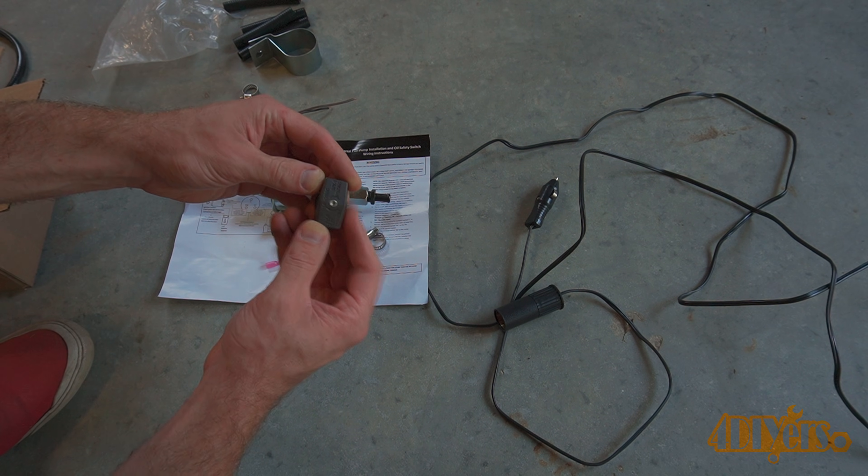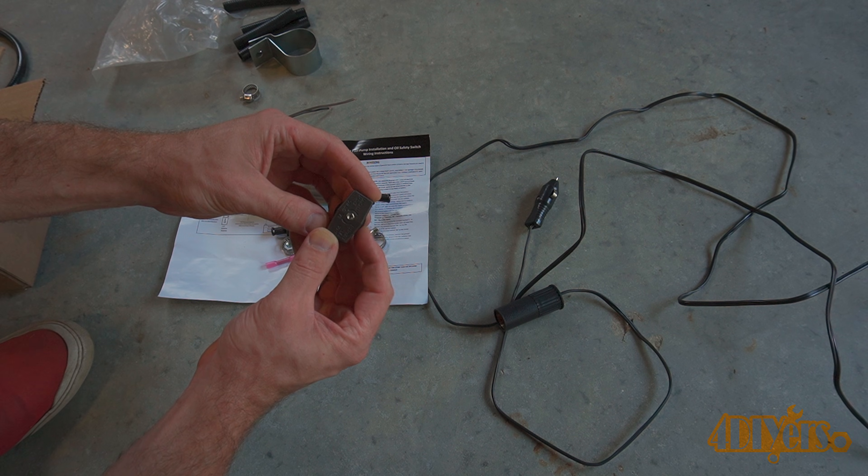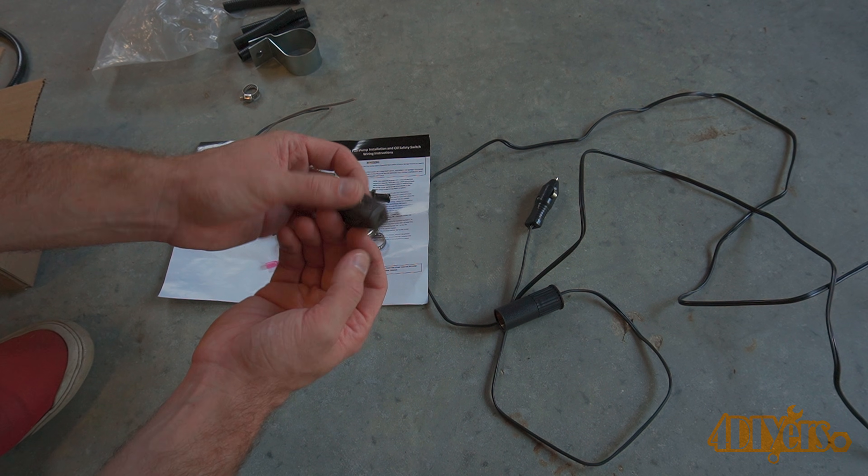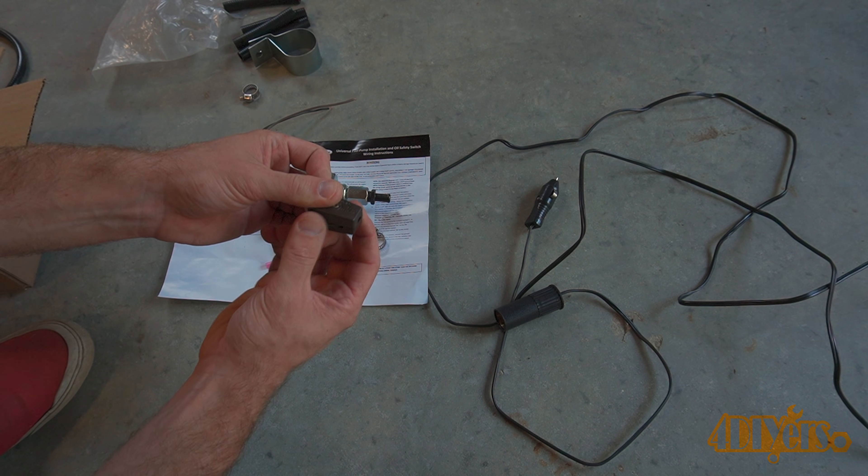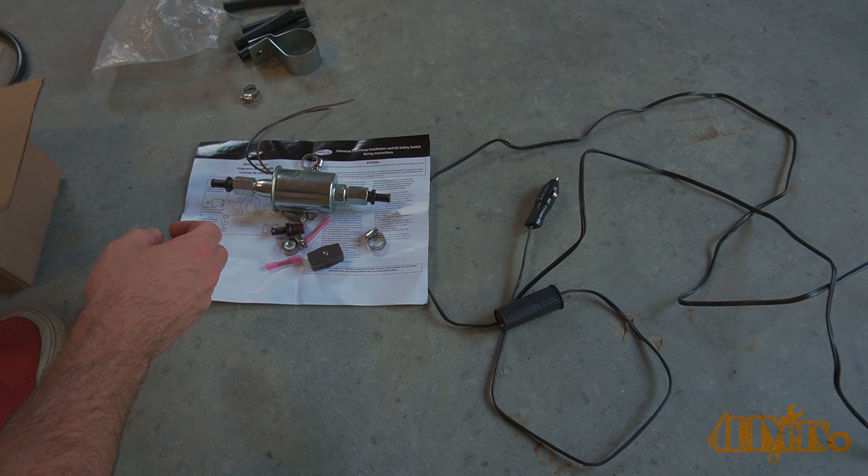Next was a rotary switch. I had this laying around and it was originally intended for a light. The switch will fit nicely onto the wire without creating anything bulky. It's important that the switch does match or exceed the amperage draw of the fuel pump.